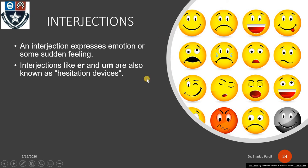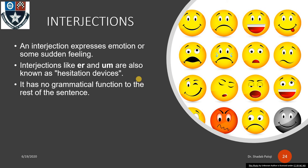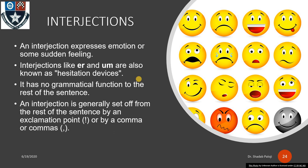Interjections are also known as hesitation devices — expressing hesitation when you can't show facial expressions in written form. Interjections have no grammatical function in the rest of the sentence. Unlike prepositions or conjunctions which are grammatically involved, interjections only show emotion — which is not grammatical in nature. They are generally set off from the rest of the sentence by an exclamation mark or a comma, placed immediately next to the word expressing emotion — not at the end of the sentence.